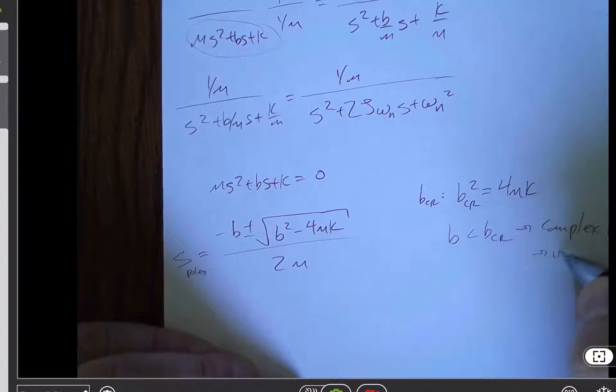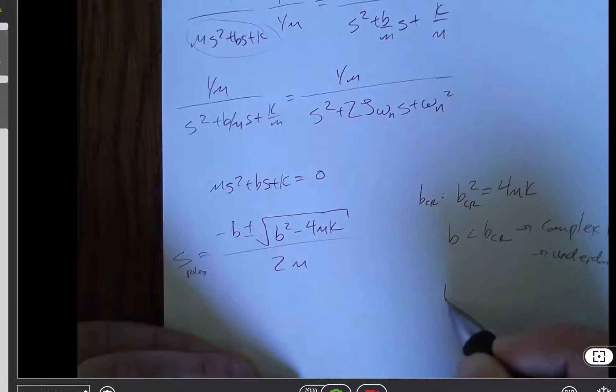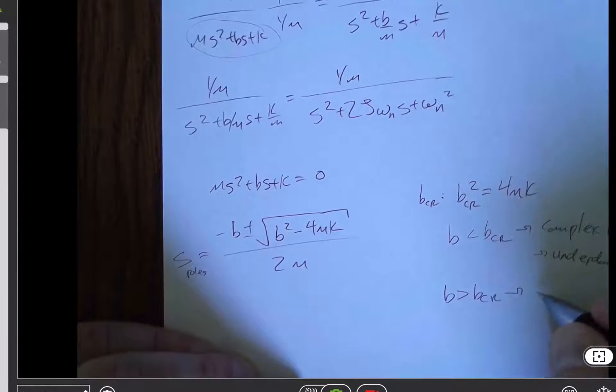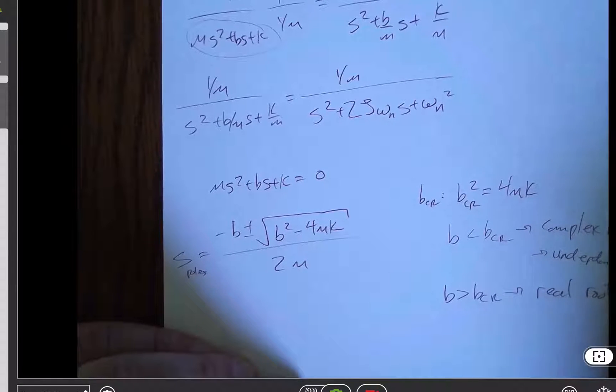And in our case, that means we're going to call that underdamped. If b is greater than b critical, then we have two distinct real roots. And that is overdamped.